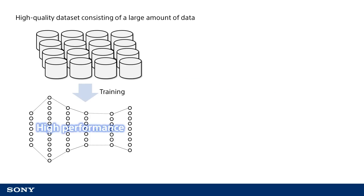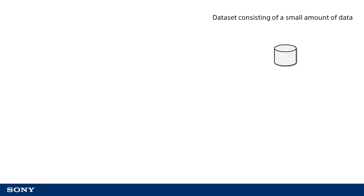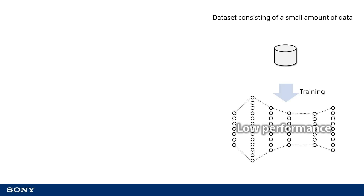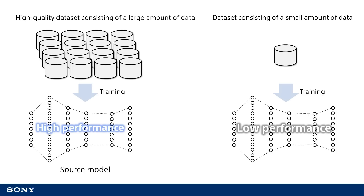With deep learning, we can achieve an extremely high level of recognition performance by training a neural network with a large amount of data. Practically speaking, it is often difficult to collect a large amount of data quickly enough when tackling a completely new task. However, obtaining sufficient performance using only a small amount of data for training is also difficult. In these situations, we can use transfer learning to reuse neural networks trained with a large amount of data. By applying transfer learning to a new task, you can possibly achieve significantly higher performance, even with a dataset as small as a few dozen or hundred data samples.